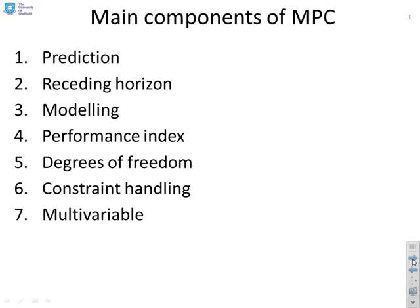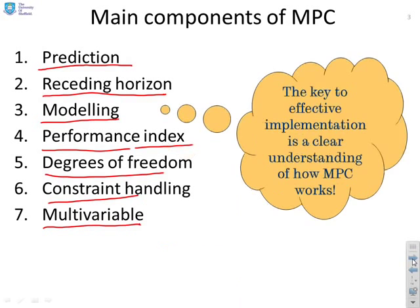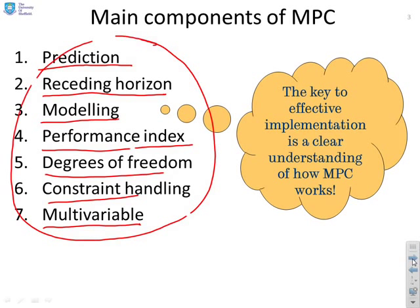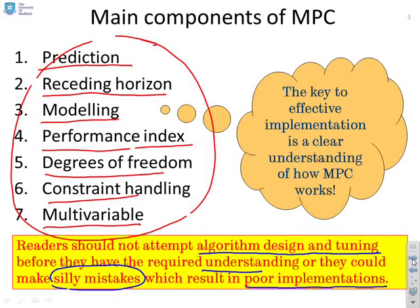What are the main components of a predictive control law? The main ones are: prediction, the concept of a receding horizon, modelling, a performance index, degrees of freedom, constraint handling, and multivariable — though you could list more. The key to effective implementation of a predictive control law is a clear understanding of how MPC works — meaning a clear understanding of all of these components. Readers should not attempt a predictive control algorithm design or tuning before they properly understand all these components, because otherwise they will make silly mistakes, and the literature is full of such mistakes, or they could end up with a poor implementation.